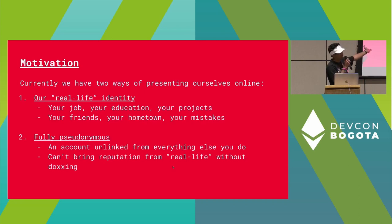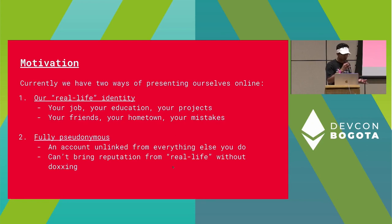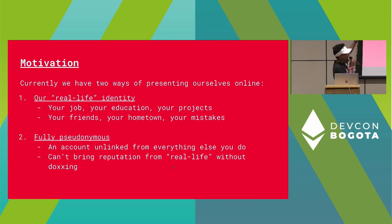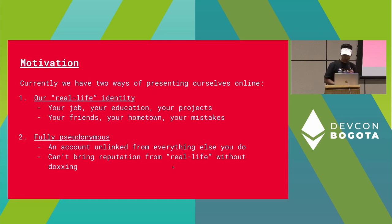That includes your social graph, your hometown, all the random tweets you said. And then the other basic option is to be fully pseudonymous — an account that's unlinked from everything else. But if you bring any reputation from your real-life identity into your pseudonymous account, it can be really easy to sort of dox you.